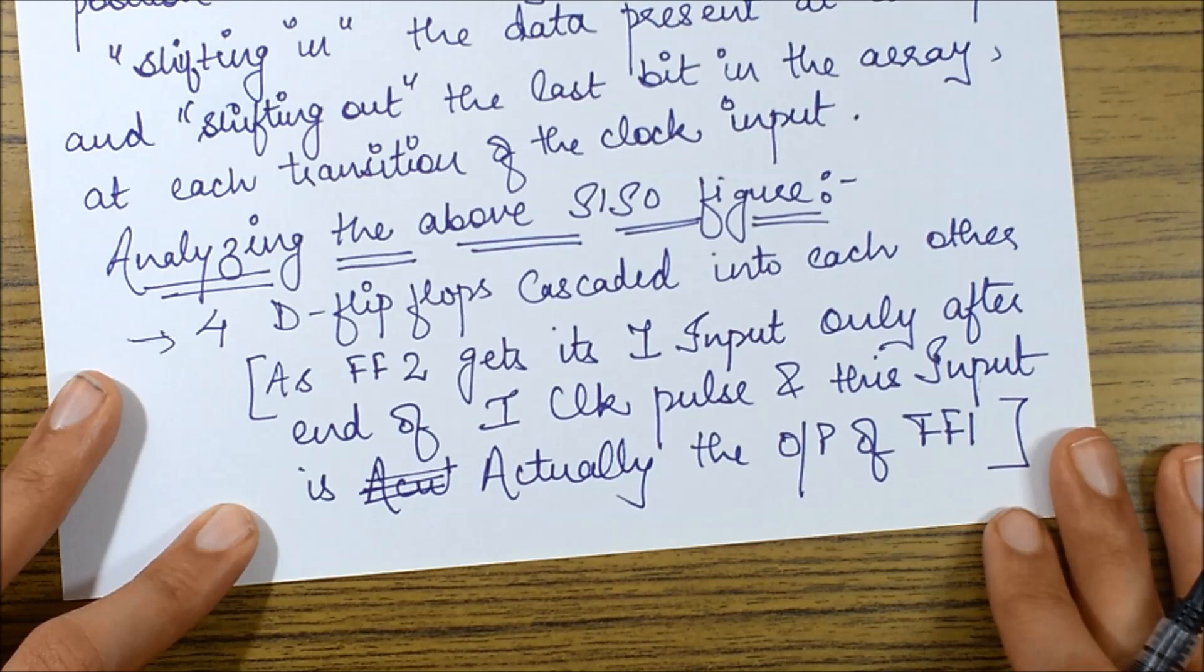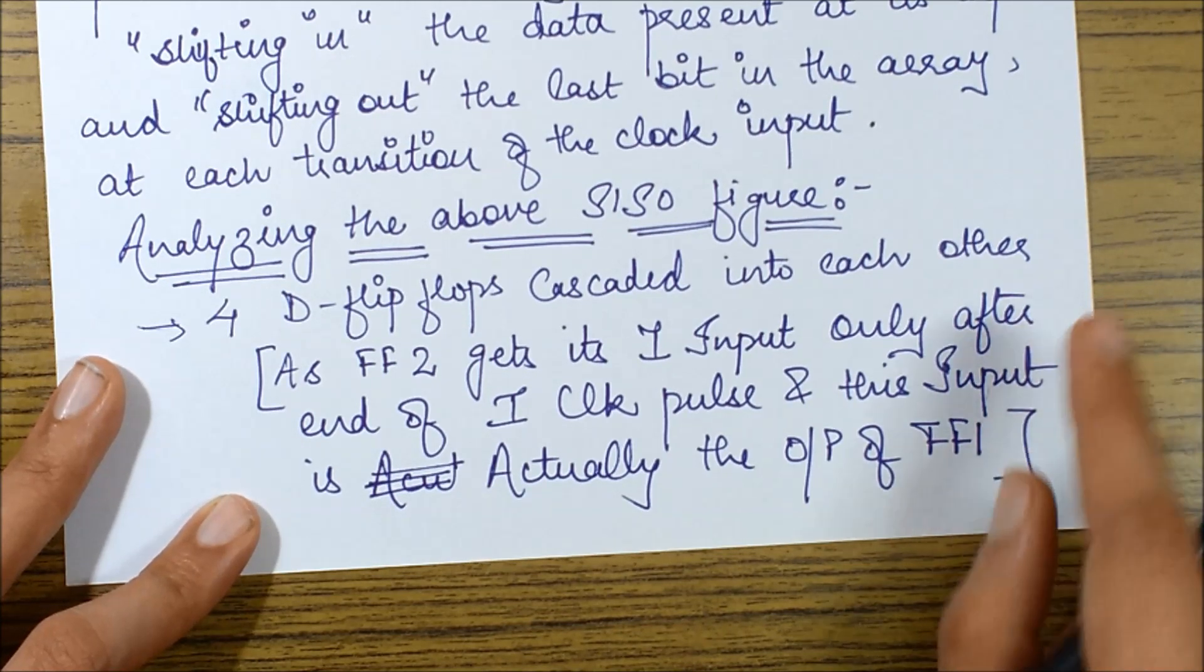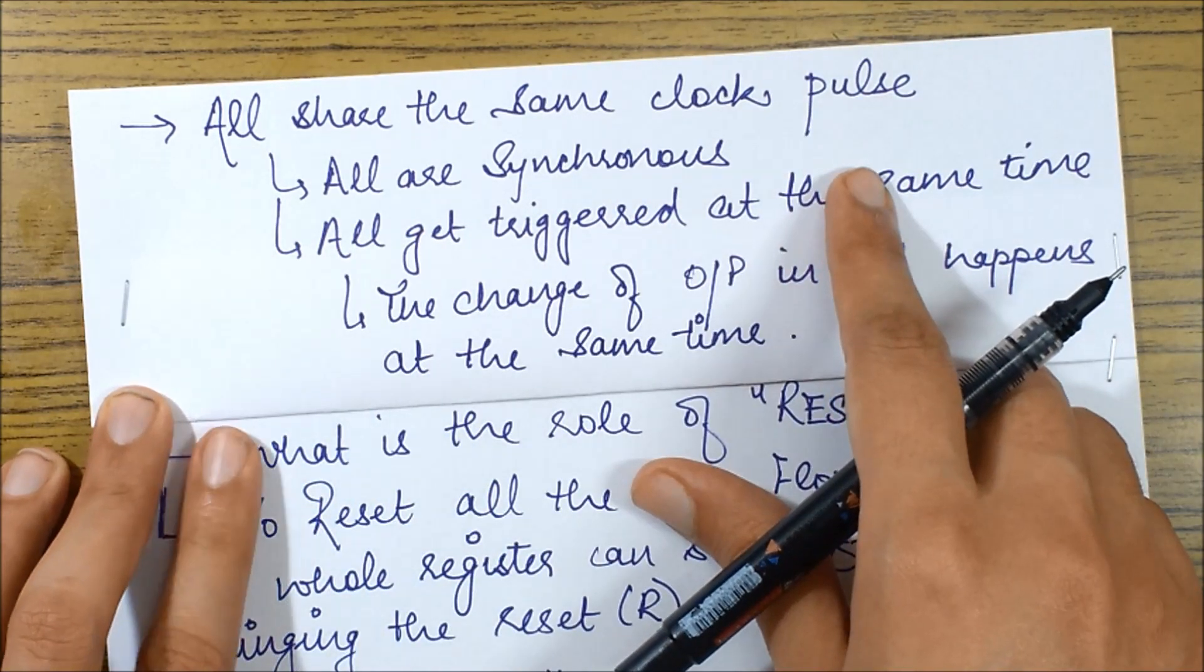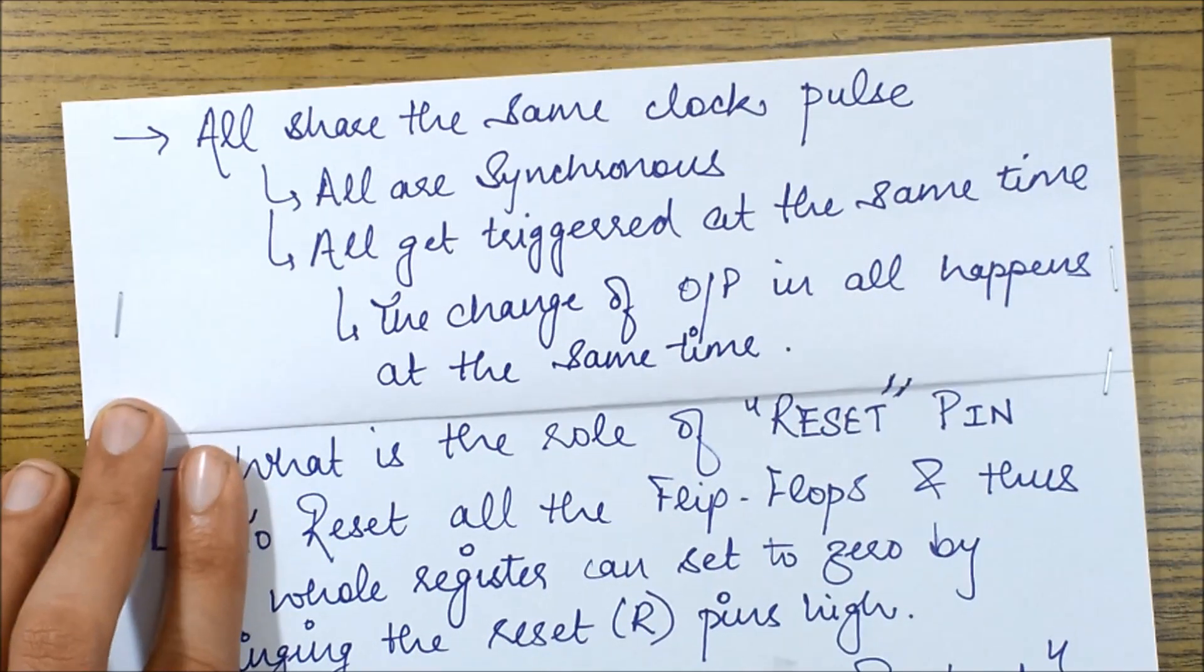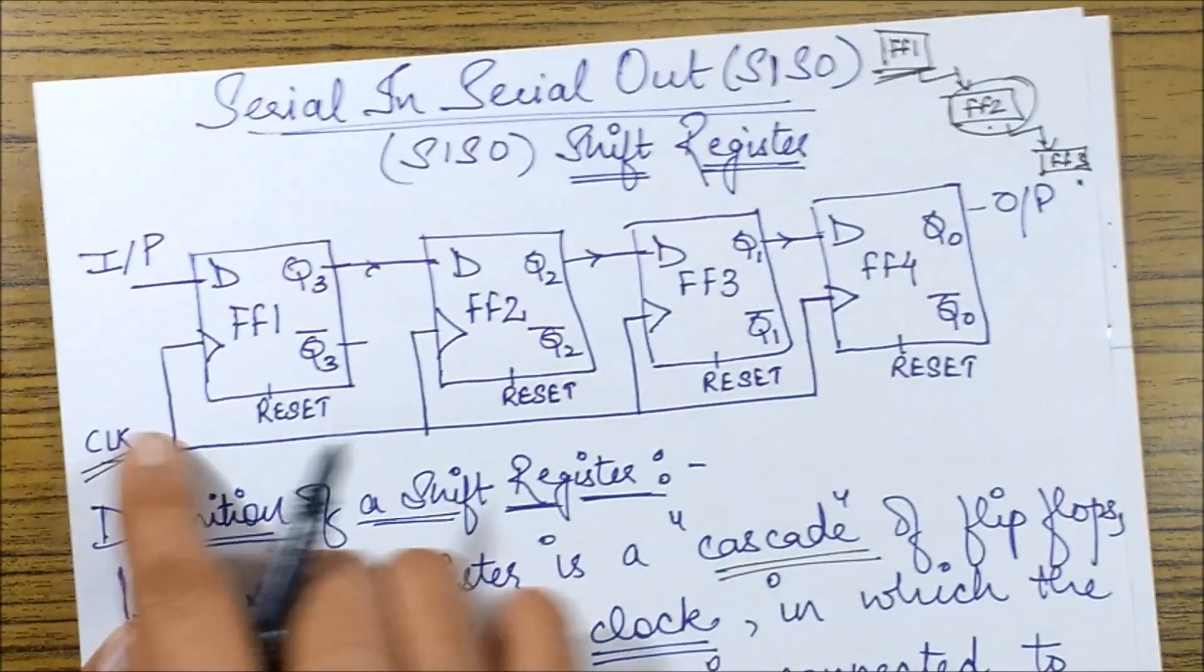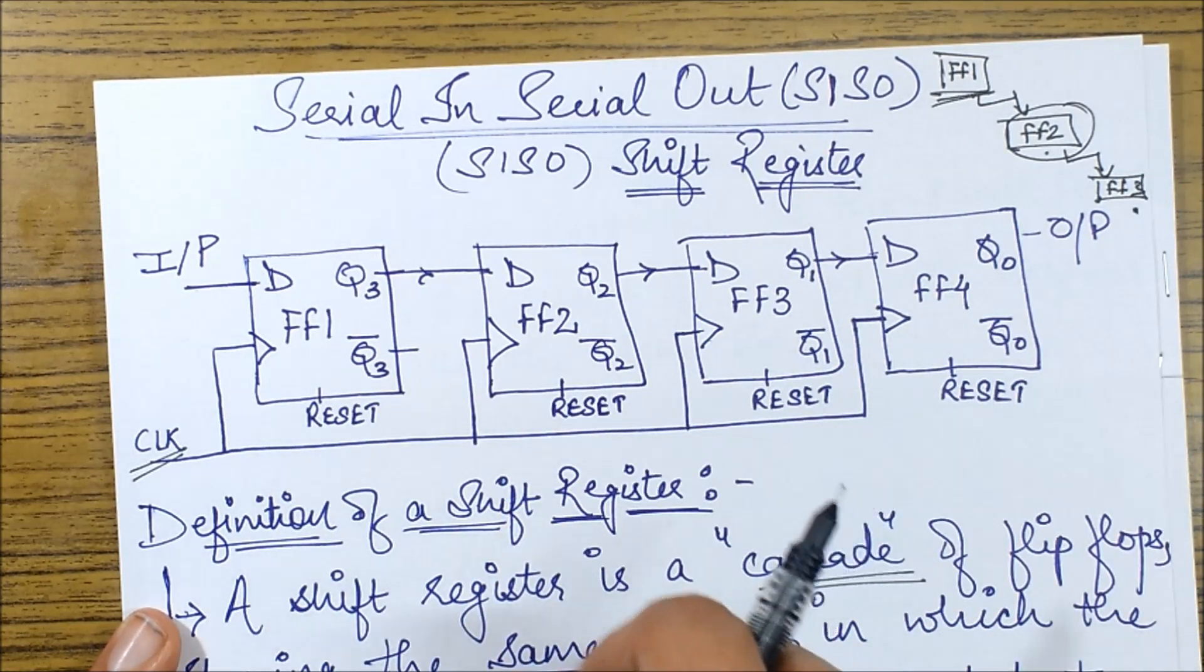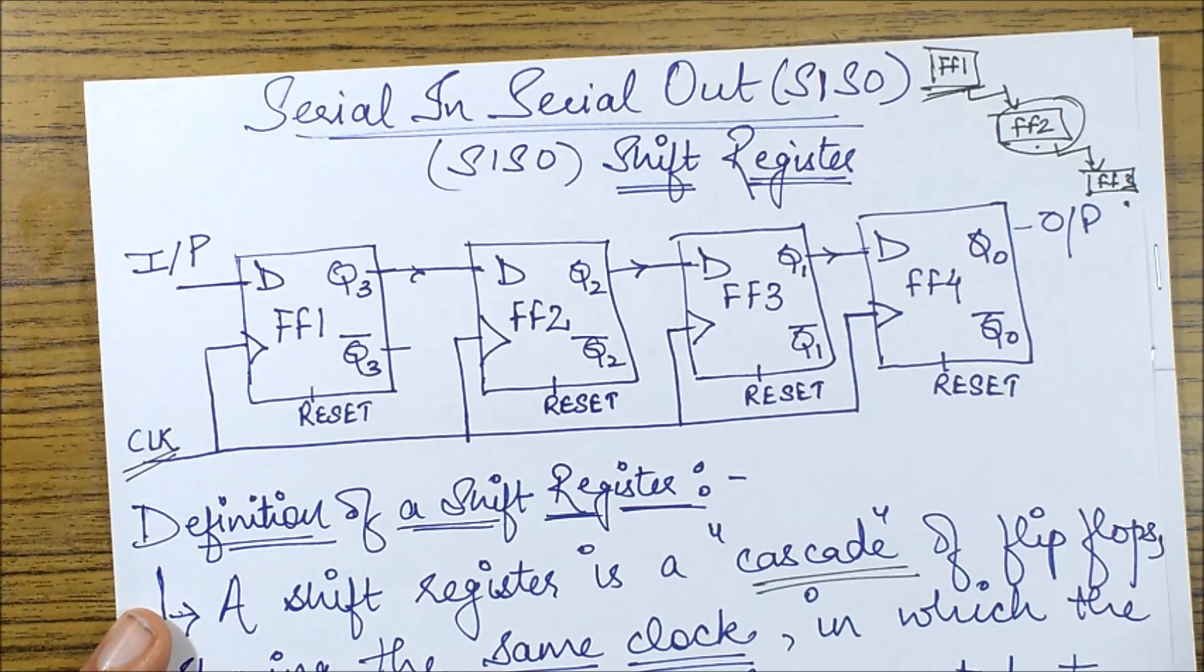So analyzing the above SISO figure, we see that there are four D flip-flops cascaded into each other, as the input of one becomes the output of the other. And next thing which we observe is that all share the same clock pulse, therefore all are synchronous and all get triggered at the same time. What do I mean by all get triggered? It means basically that when I supply a clock pulse it will be entered into all.